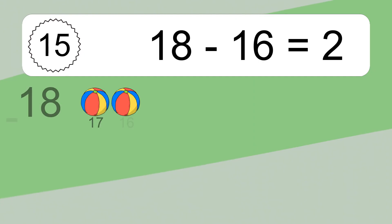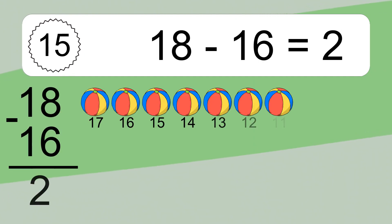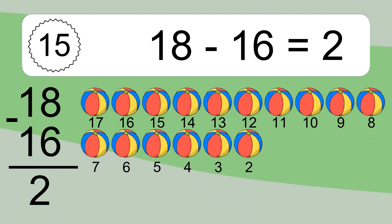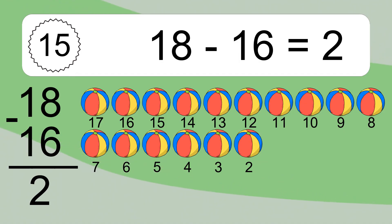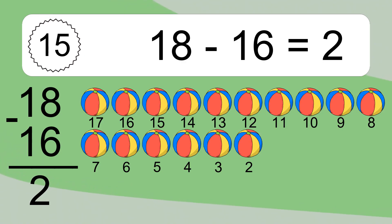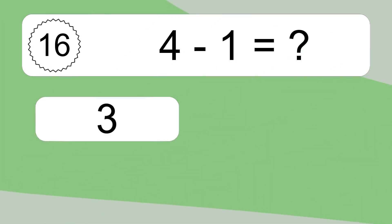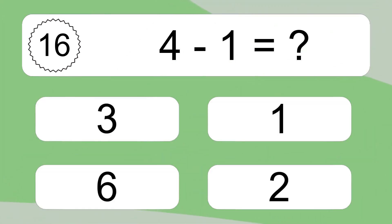18 minus 16 equals 2. Let's count it: 17, 16, 15, 14, 13, 12, 11, 10, 9, 8, 7, 6, 5, 4, 3, 2. 10 minus 4 equals what?